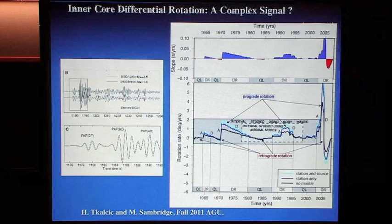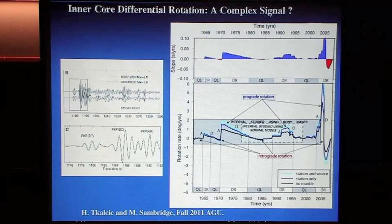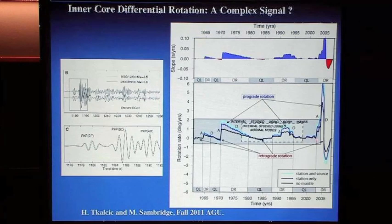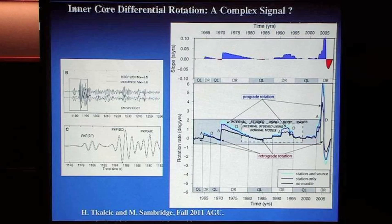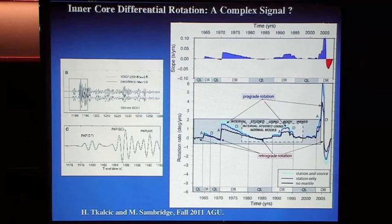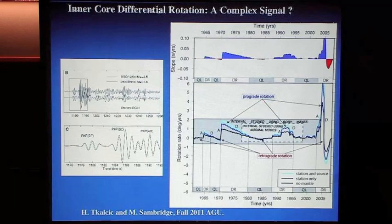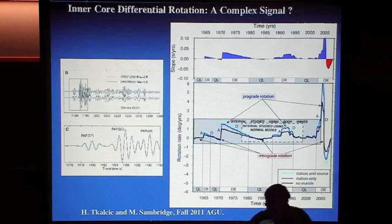This is a very controversial type of measurement, often getting different results depending on starting assumptions about heterogeneity within the inner core. One controversy is that normal mode observations indicate a near-zero differential rotation rate spanning 1980 to about year 2000. Body waves indicate a more steady signal, but at least one recent study by Tkulchik and Sandbridge indicates the rotation is not steady but punctuated by prograde and retrograde rotation — and depending on how you average it over time, it may look like a near-zero signal.